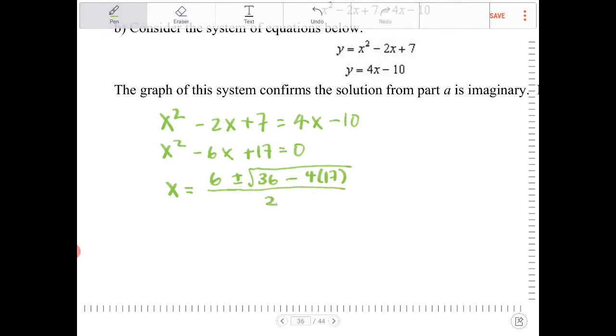Let me shorten the fraction bar there. All over 2a, so it's just 2. And to simplify this further, we end up with 6 plus or minus square root of... Let me write this a little further down.